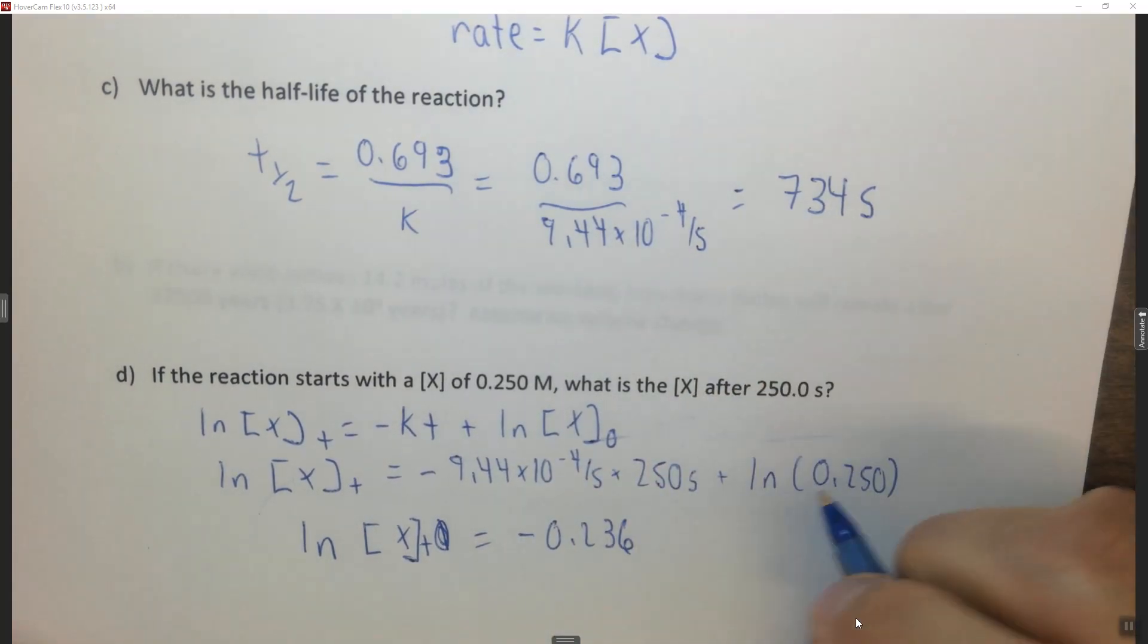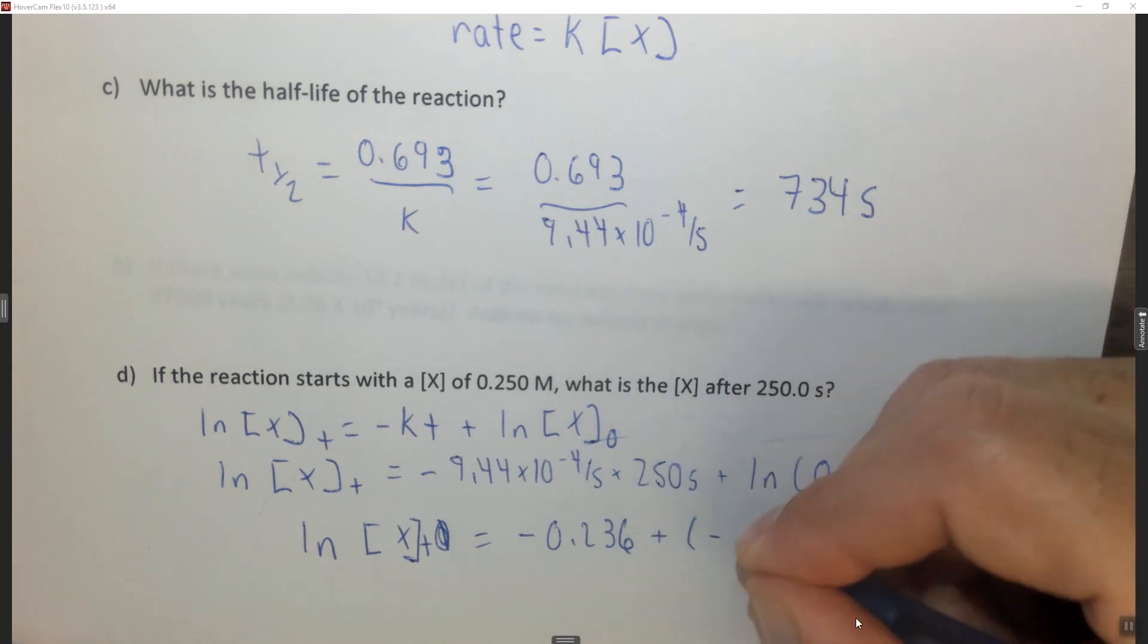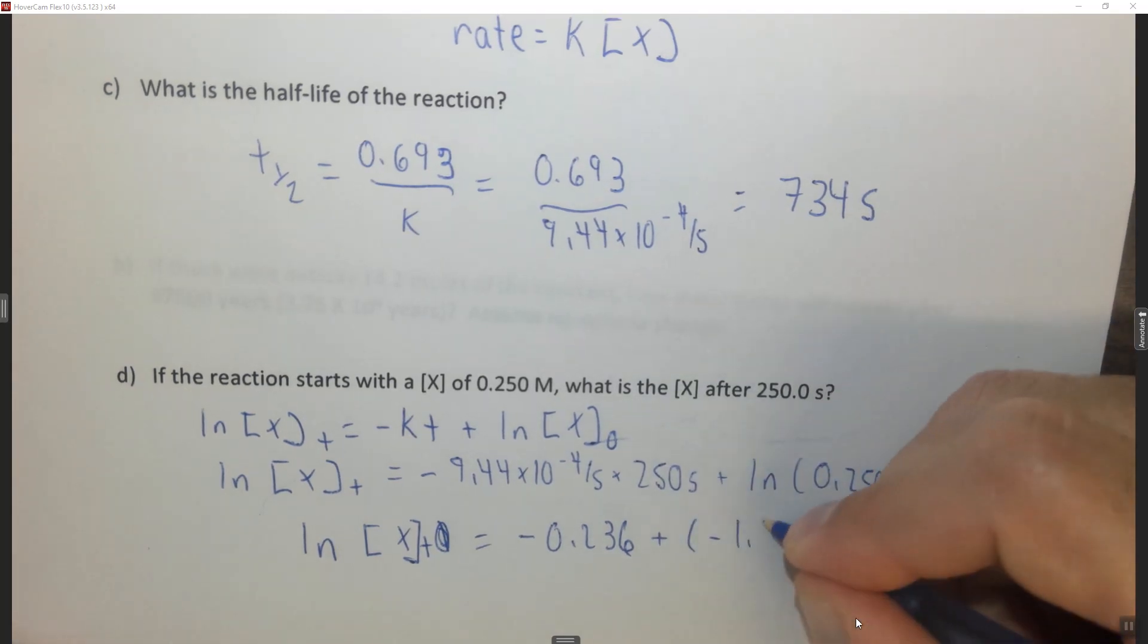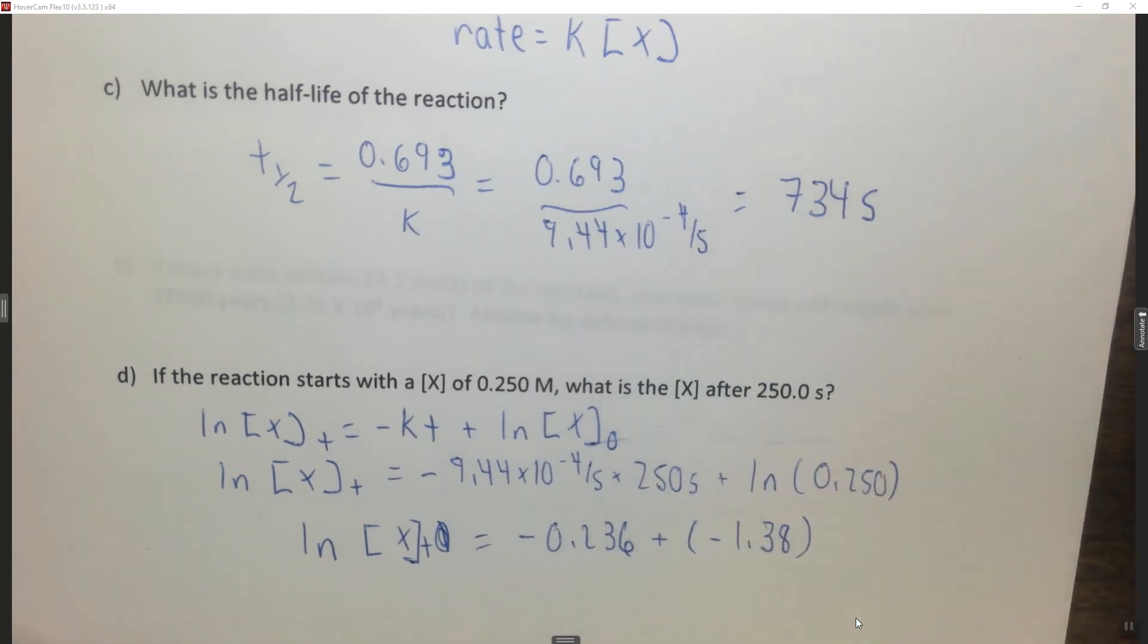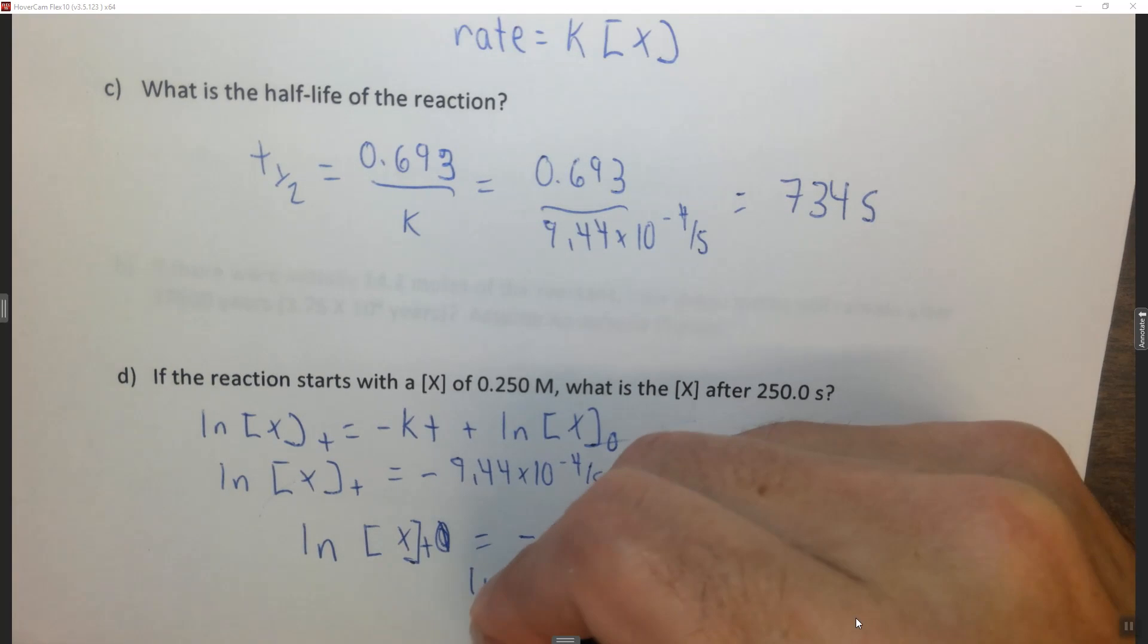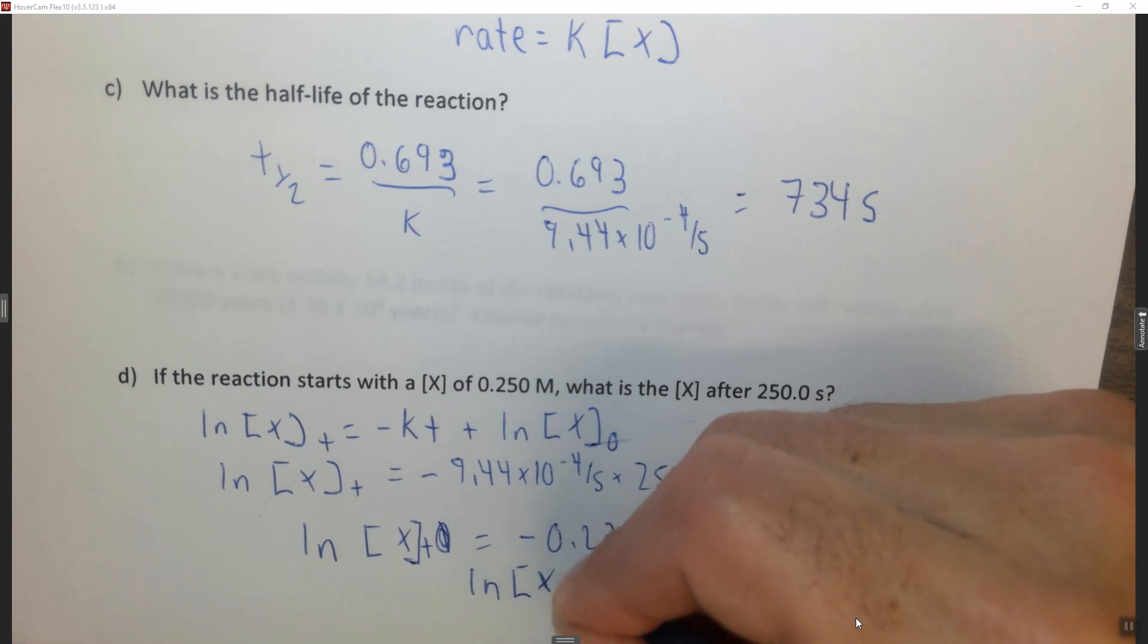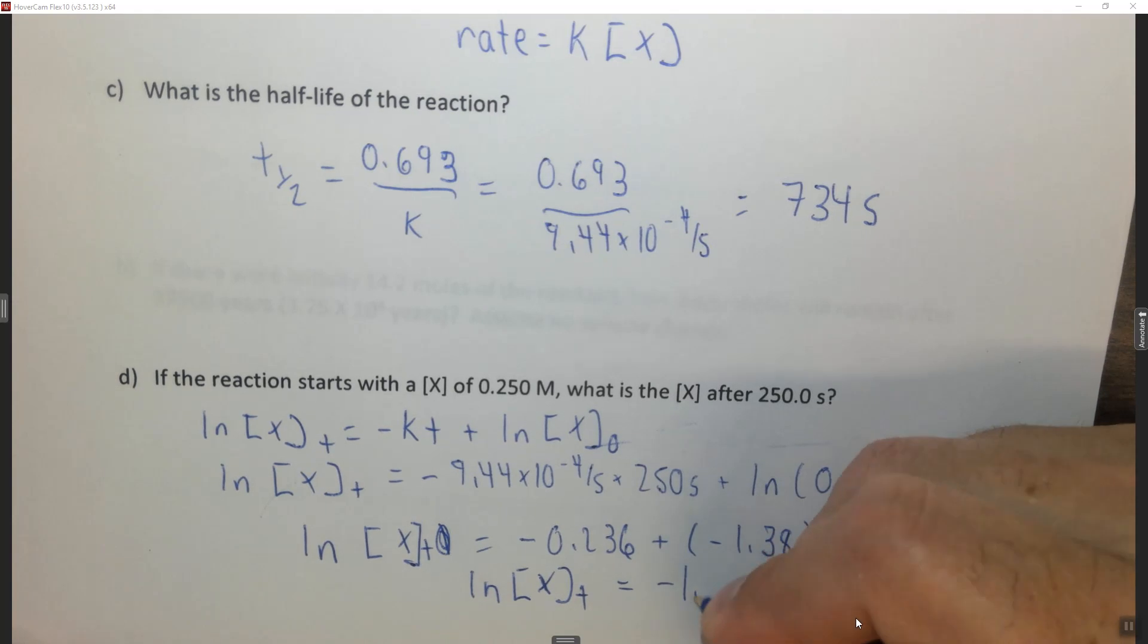And if you add, then you add to this, you get plus a negative 1.38. So when you take the ln of this in your calculator, basically you're just taking a negative and adding another negative, and what you get is the ln of the x at some time equals negative 1.62.